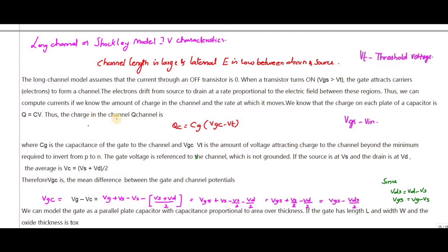The charge in the channel, Q_channel, equals C_G — the gate capacitance — multiplied by (V_GC − V_T). We apply the voltage between the gate and the channel. We write V_GC − V_T because the V_GC value must be greater than V_T for the device to conduct; only then will it form the channel.